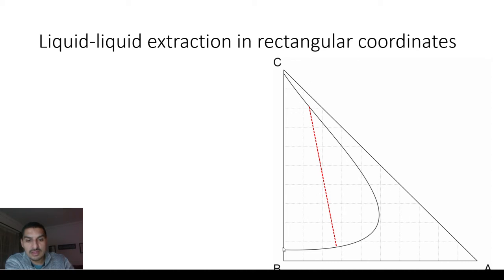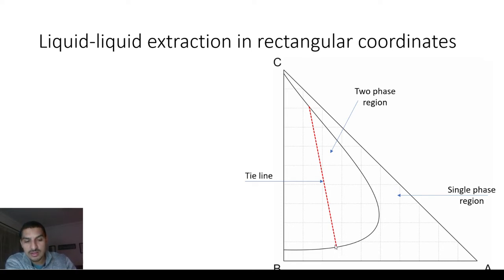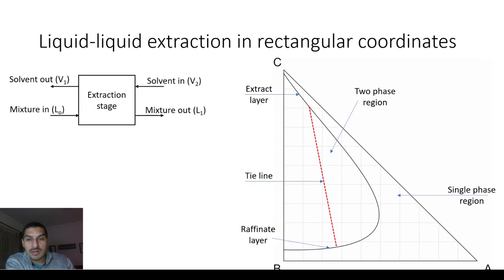The phase diagram contains the equilibrium curve, which splits the area into two regions: the two-phase region, which splits into two phases spontaneously, and the single-phase region, which is the homogeneous phase. The two-phase region contains tie lines that tell us the equilibrium relation. These tie lines intersect the curve at two points that are in equilibrium. The top part of the equilibrium curve is the extract layer and the bottom part is the raffinate layer.